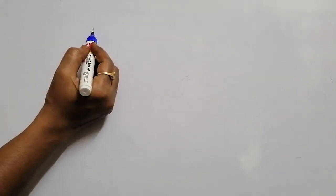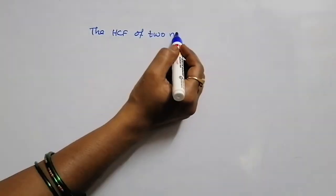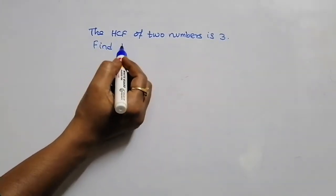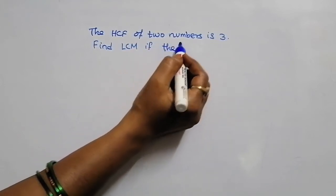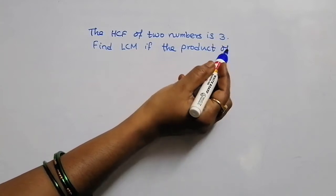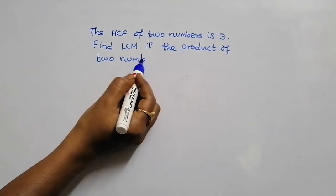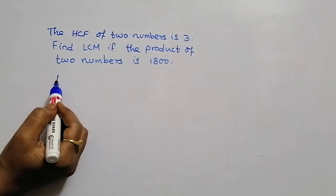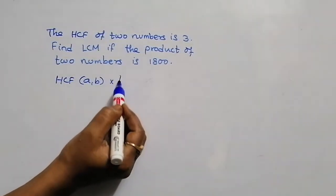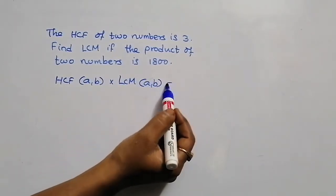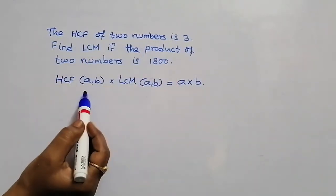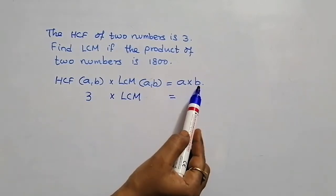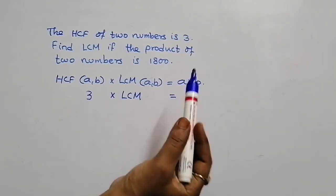Let us take the first question. The HCF of two numbers is 3. Find LCM if the product of two numbers is 1,800. Let us write the formula first: HCF of A, B into LCM of A, B is equal to A into B. Here we know the HCF is 3, so write 3 here into LCM — we have to find that. The product of the two numbers A and B is 1,800, so write 1,800 here.